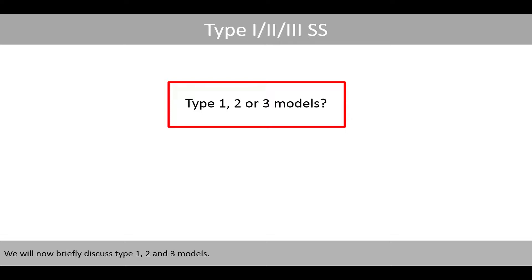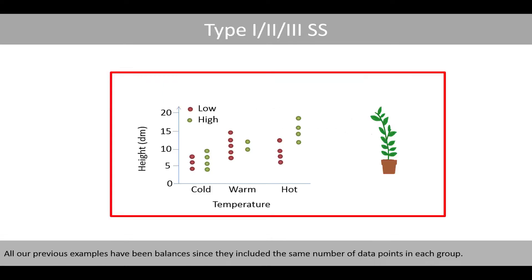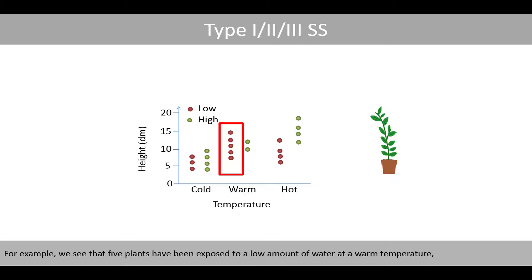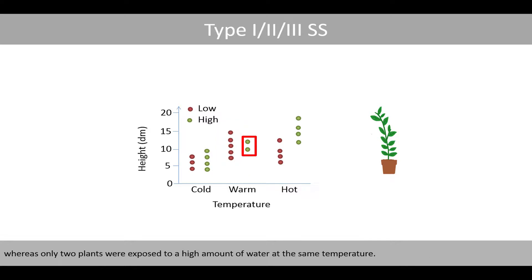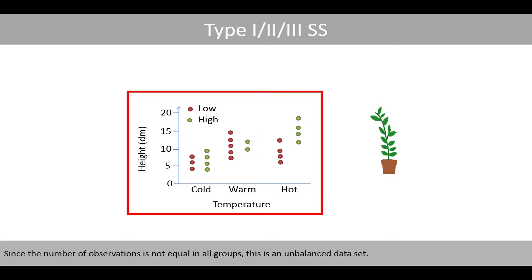We will now briefly discuss type 1, 2 and 3 models. All our previous examples have been balanced, since they included the same number of data points in each group. However, in this example the data is unbalanced, which might be due to the study design or missing observations. For example, five plants were exposed to a low amount of watering at warm temperature, whereas only two plants were exposed to a high amount at the same temperature. Since the number of observations is not equal in all groups, this is an unbalanced dataset.